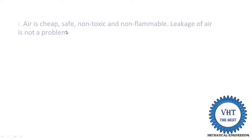The first reason is that air is freely available and has no cost. It is safe — non-toxic and non-flammable. Non-toxic means it is not hazardous to human beings, and non-flammable means there is no possibility of fire if there is a leakage. At high altitude, if we use the VCRS system, it contains flammable refrigerants that are hazardous to humans. If a leakage occurs while the aeroplane is flying at high altitude, it is very dangerous — that is why VCRS is not used in aircraft.